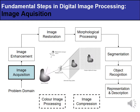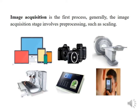Image acquisition is defined as the action of retrieving an image from a source — usually a hardware-based source — or the process of processing it. It is the first step; without an image, no processing is possible. The image at this stage is completely unprocessed. Therefore, image acquisition may involve pre-processing such as scaling. Various objects have been shown via which an image can be captured.